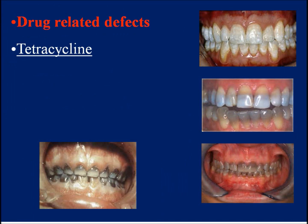Drug-related defects. A. Tetracycline. In the 1960s, tetracycline was used to treat chronic obstructive diseases and was discovered to discolor teeth in children. Color change ranges from light yellow to darker gray to brown, depending on the dosage, duration of intake, and age of the patient at the time of administration. Tetracycline binds to calcium and gets incorporated into the hydroxyapatite crystals of enamel and dentine.